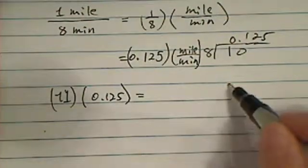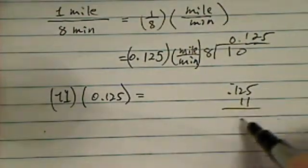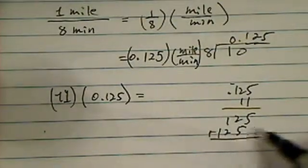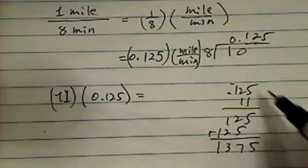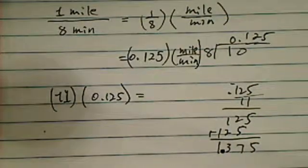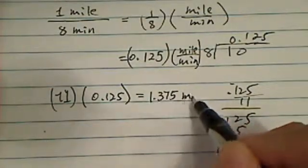That would give you the answer. So 0.125 times 11, that's 1 to 5, 1 to 5. And we add it up: 7, 3, 1 and there's 3 decimals. So here's your decimal. So it's 1.375 miles.